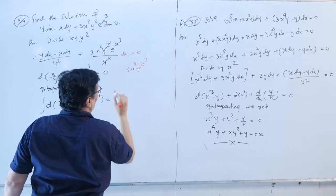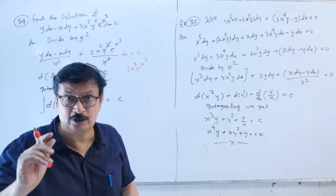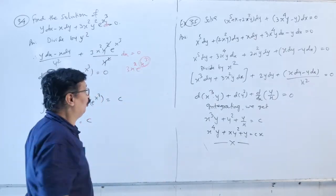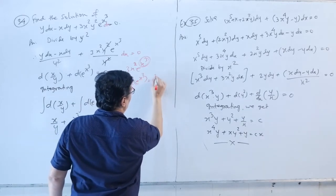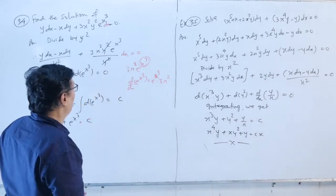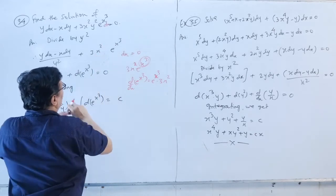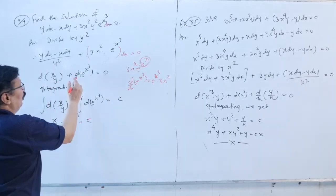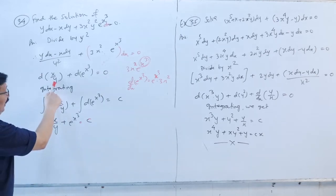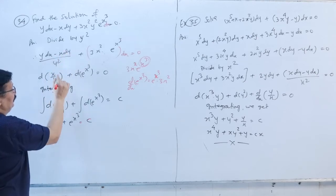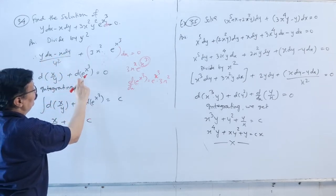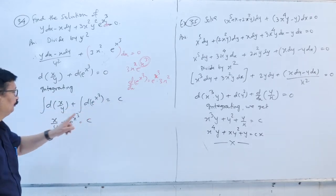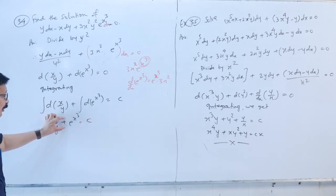Now (y·dx − x·dy)/y² = d(x/y). Also, 3x²·e^(x³) = d(e^(x³))/dx since the derivative of e^(x³) is e^(x³)·3x². So the equation becomes d(x/y) + d(e^(x³)) = 0. Integrating: x/y + e^(x³) = c is the required solution.